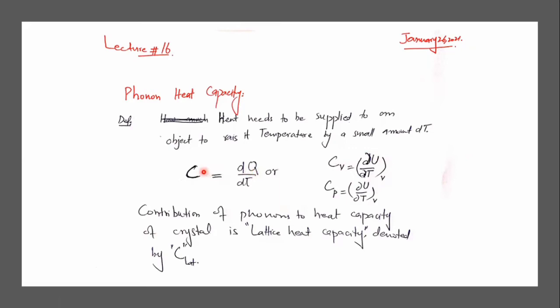Heat capacity C is defined as dQ/dT. The unit of heat is Joule because it is energy, divided by temperature, so Joule per Kelvin is the unit of heat capacity. You may also know that Cp minus Cv is equal to R for the case of gases.